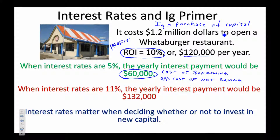When interest rates are 11%, everything changes. You could put $1.2 million in the bank and earn $132,000 — more than the profit from the restaurant — or if you borrowed, your interest payments would exceed your profit. The key point is that higher interest rates reduce investment and lower interest rates increase it. This is why it matters for fiscal policy.